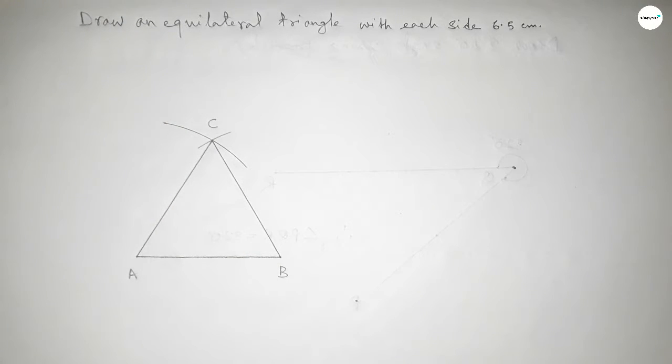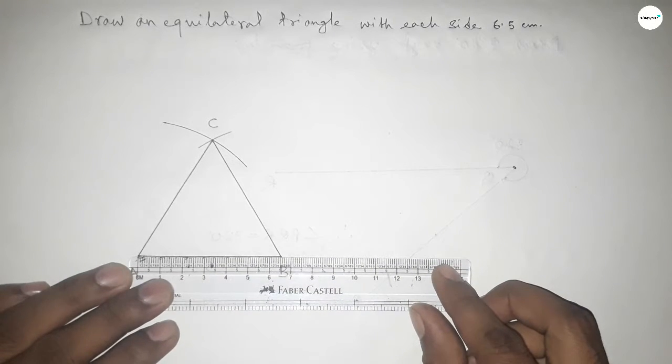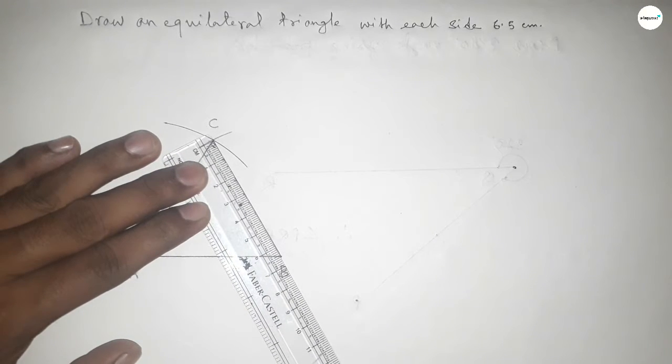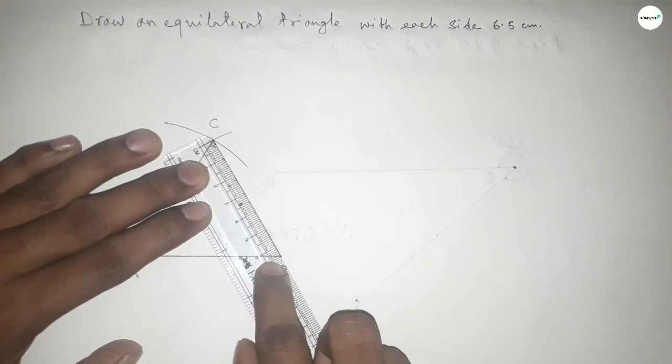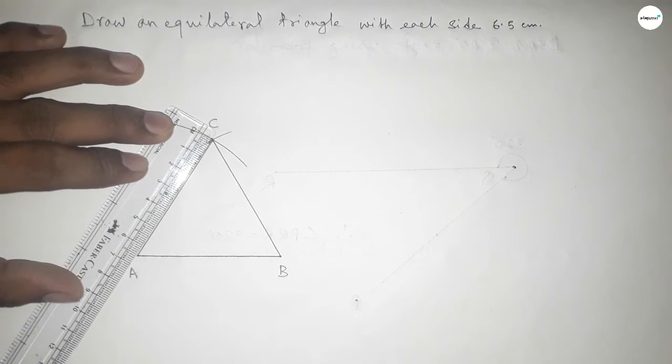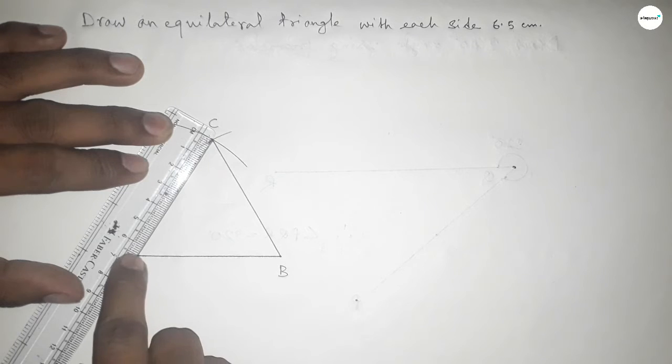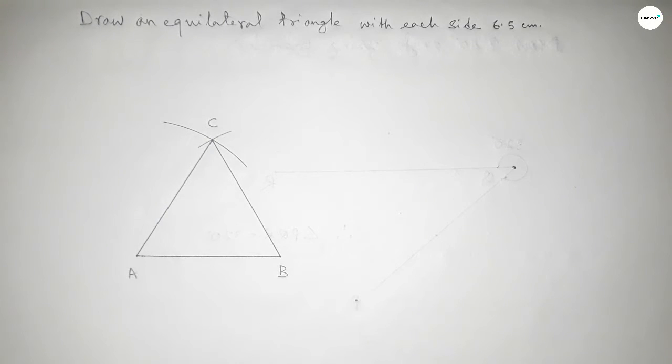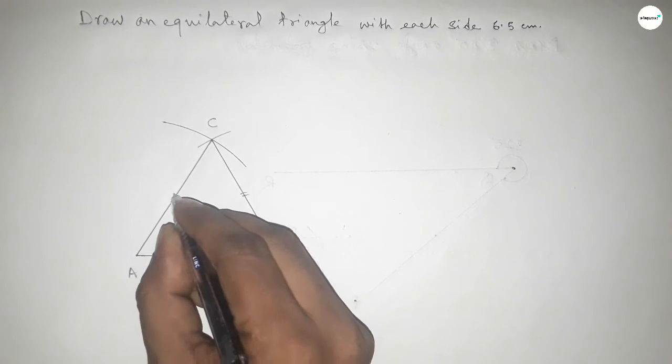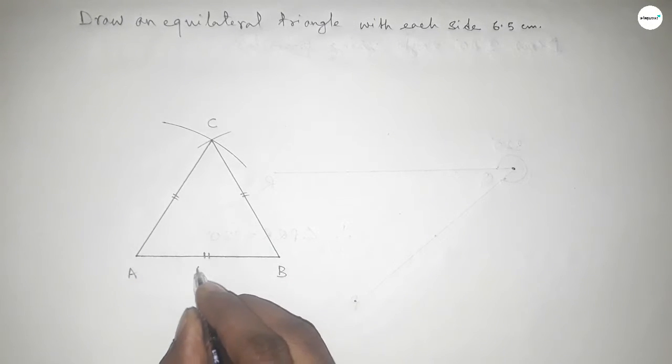Now checking all the sides are equal or not. So this is 6.5 cm, this is also 6.5 cm and this is also 6.5 cm. So all the sides are equal, so mark the equal sign on three sides.